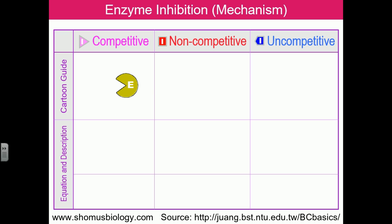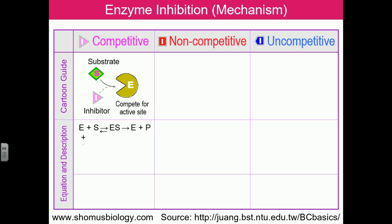In competitive inhibition, the substrate competes with the inhibitor for binding to the enzyme active site cleft. There is a competition between the substrate and the inhibitor for binding the active site. The enzyme can interact with substrate to form an enzyme-substrate complex, which converts substrate to product. The inhibitor can also interact with the enzyme to form an enzyme-inhibitor complex, which produces no product — the enzyme becomes occupied with the inhibitor and the process is prevented.